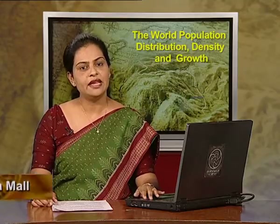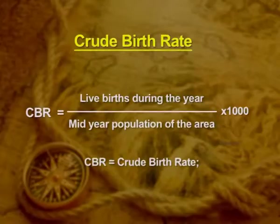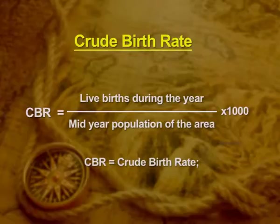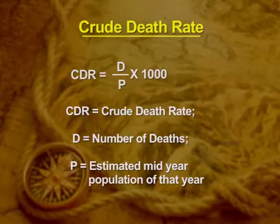Now, let us learn to compute the birth rate and the death rate. To compute the crude birth rate, we divide the number of live births during the year by the mid-year population of the area and multiply by 1,000. Similarly, if we divide the number of deaths by the estimated mid-year population and multiply by 1,000, we get the crude death rate.